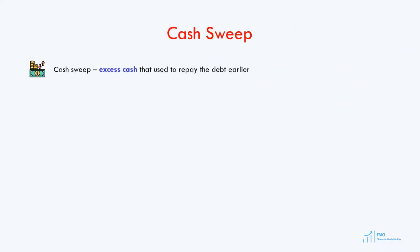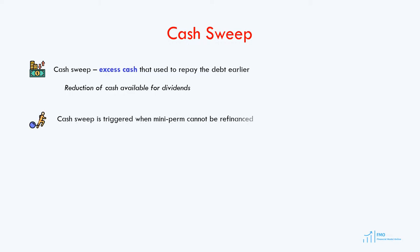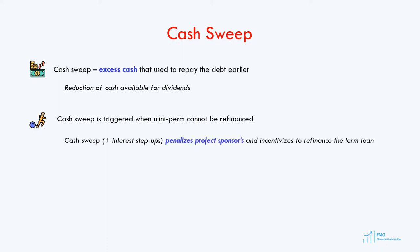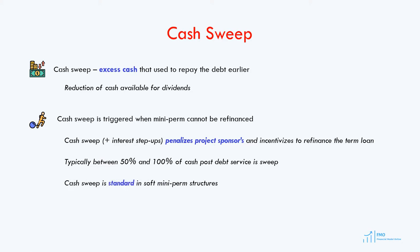Let's review the cash sweep in detail. The cash sweep is cash flow that remains after paying debt service and funding the reserve accounts, and that cash is used to repay the debt. This results in a reduction of cash available for dividends and lowers the equity IRR. In many mini-perm structures, the cash sweep is triggered when the loan cannot be refinanced. The cash sweep and interest rate step-ups penalize the project sponsor and incentivize them to refinance the term loan. Typically, anywhere between 50 and 100% of the cash flow after debt service and funding reserve accounts is used as a cash sweep. The cash sweep is a standard provision in mini-perm loans, so it is highly likely you will need to include it in your financial model.